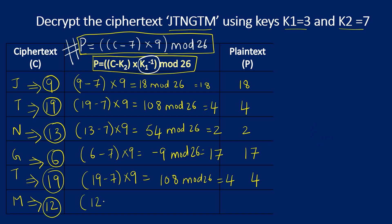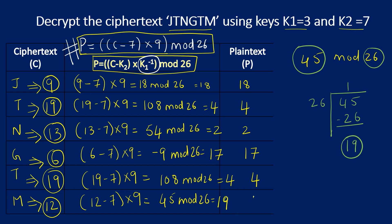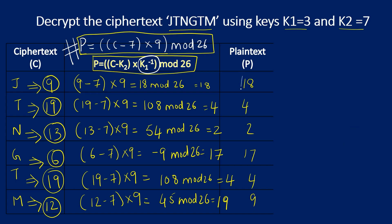For C = 12: (12 − 7) × 9 mod 26 = 5 × 9 mod 26 = 45 mod 26. Since 26 × 1 = 26, the remainder is 19. So 45 mod 26 = 19, and the recovered plaintext number is 19.